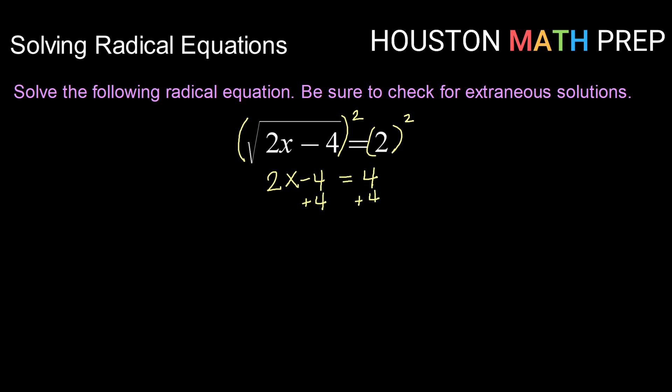Now I just go about solving for x in the normal way that I would. So I'll add 4 to both sides to get 2x equals 8. Dividing both sides by 2 I get x equals 4 as a potential solution.